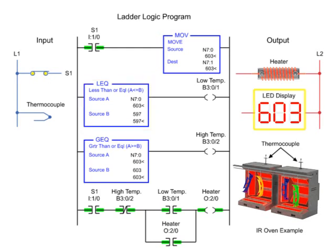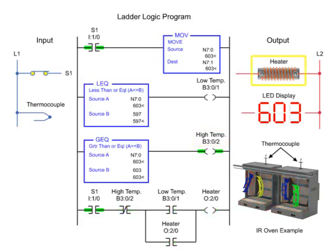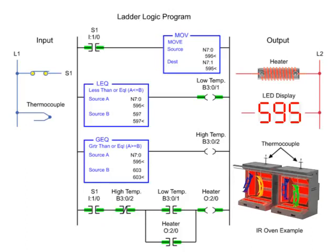Reaching 603 degrees or more, the high temp output is enabled since source A is equal to source B of the greater than or equal to instruction. When the high temp output is true, the heater turns off and remains off until the temperature reaches 597 or lower. The cycle is repeated to maintain the average set point temperature of the oven at 600 degrees Fahrenheit.